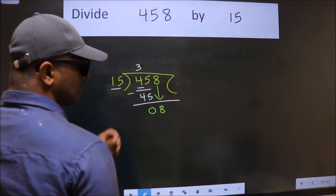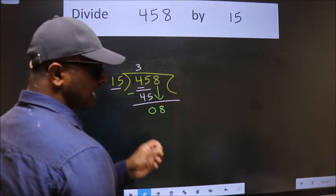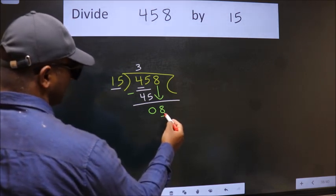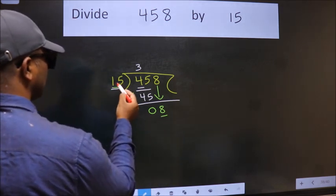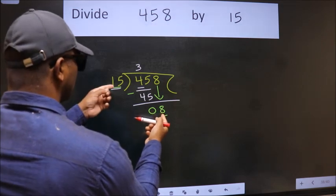After this step, the mistake happens, and the mistake is this: here we have 8, here 15. 8 is smaller than 15.